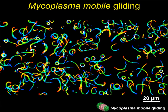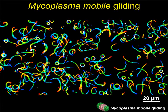In the case of Mycoplasma mobile, the fastest species glides up to 4 microns per second, as shown by this trace. However, the mechanism is quite unique and not related to any other motility systems. We've studied this unique mechanism since 1997 and clarified the following story.